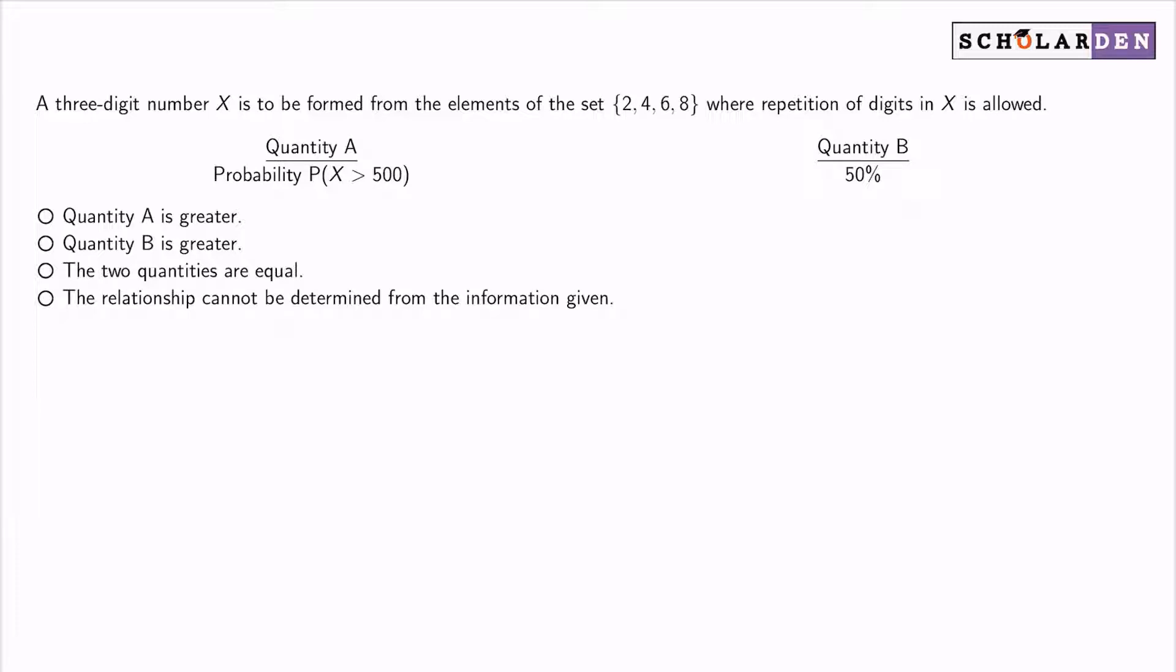Quantity A and B are being compared quantitatively, where quantity A is probability that the value of X is greater than 500 versus quantity B being 50%.